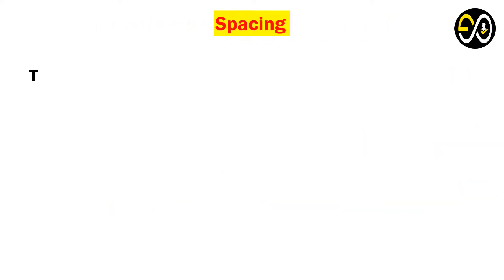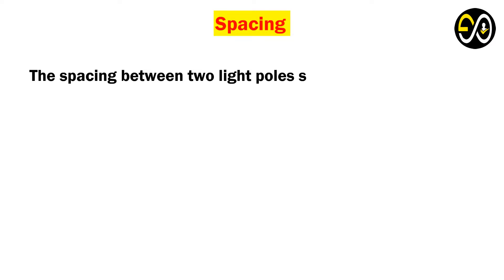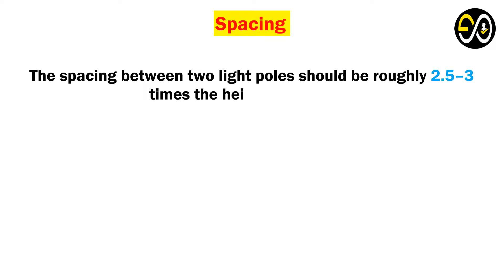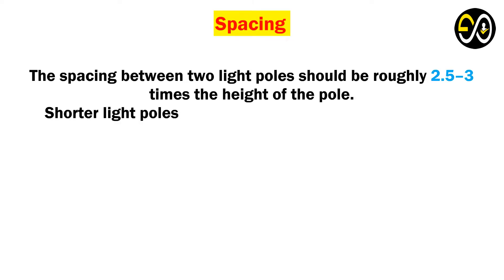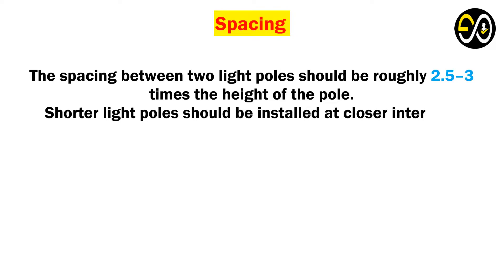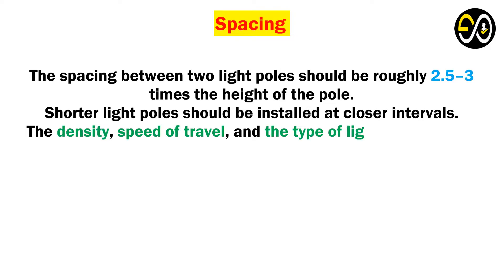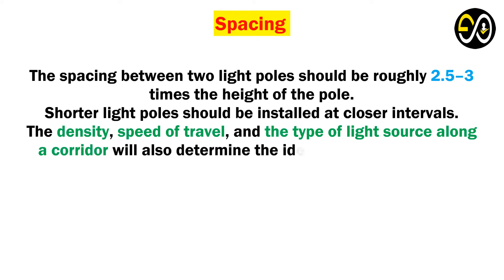The spacing between two light poles should be roughly 2.5 to 3 times the height of the pole. Shorter light poles should be installed at closer intervals. The density, speed of travel, and the type of light source along a corridor will also determine the ideal height and spacing.